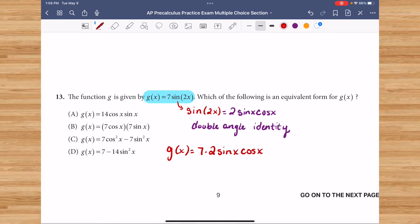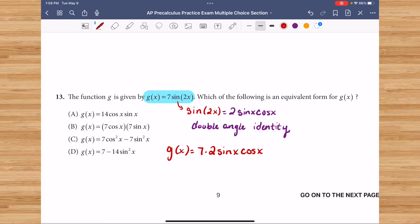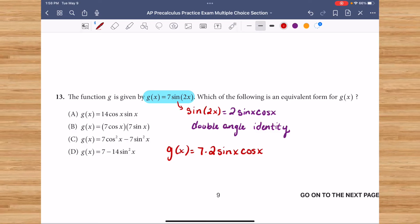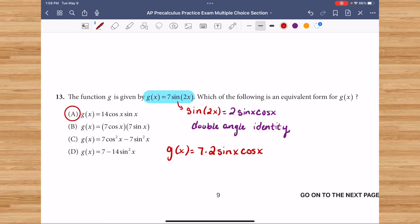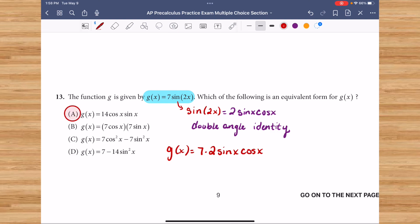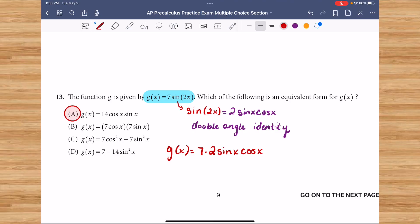7 times 2 is 14, sine times cosine. Another way to say that is cosine times sine. Our correct solution here is going to be A. We have 14 cosine of x sine of x.